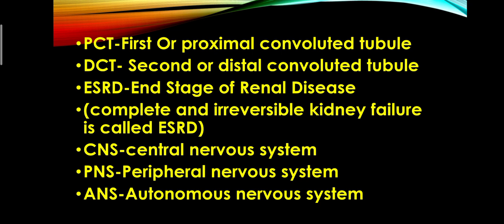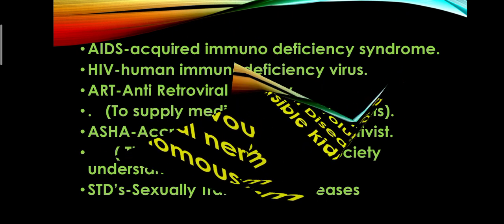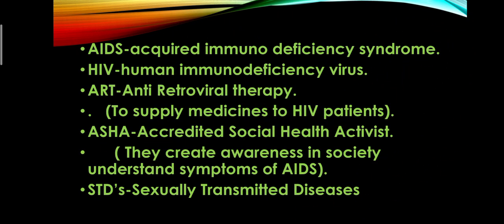Next, ANS — autonomous nervous system. Some actions are under our control and are called voluntary actions. Under the autonomous nervous system, all involuntary actions work, such as respiration, digestion, and transportation of food materials — all these are under the control of ANS.